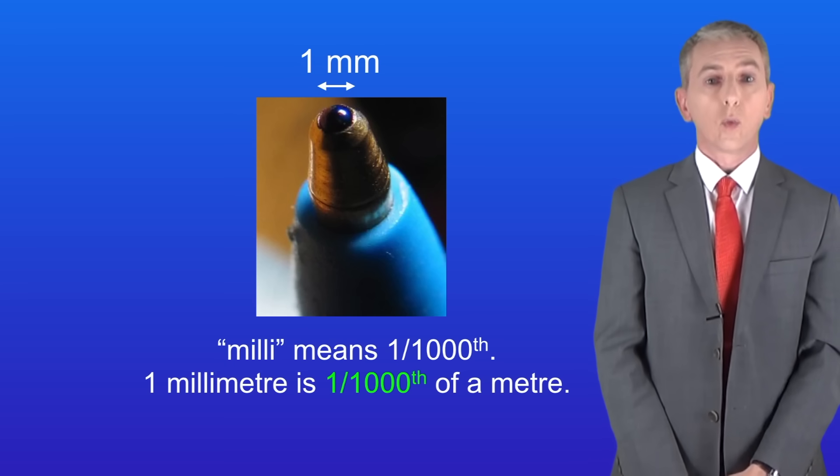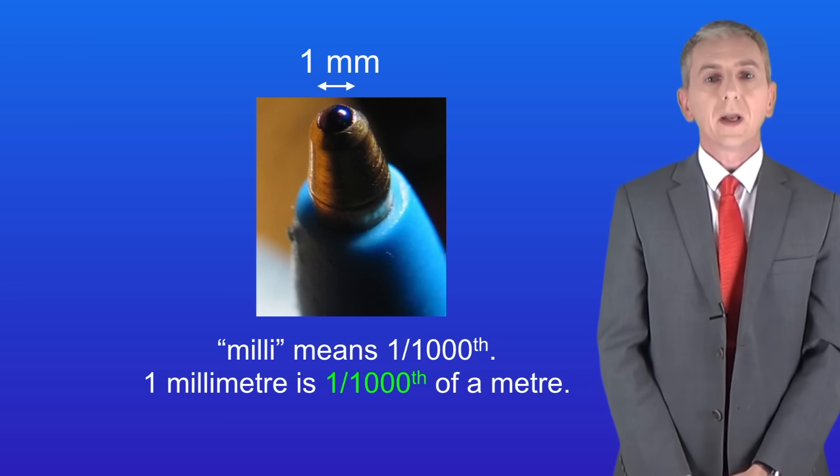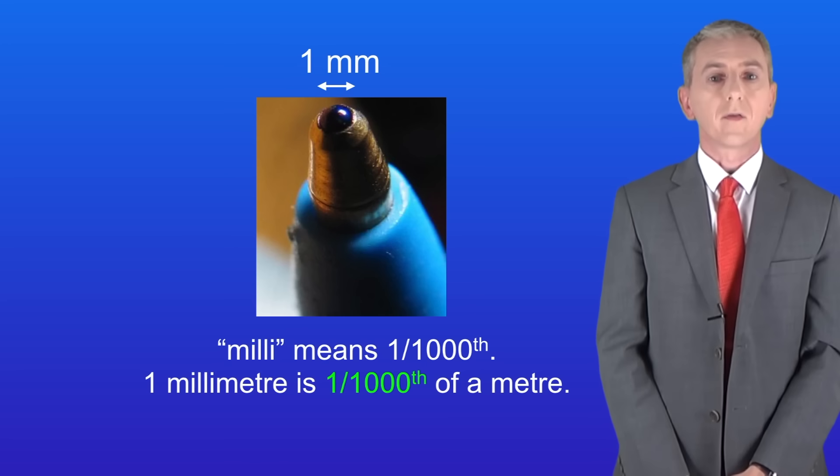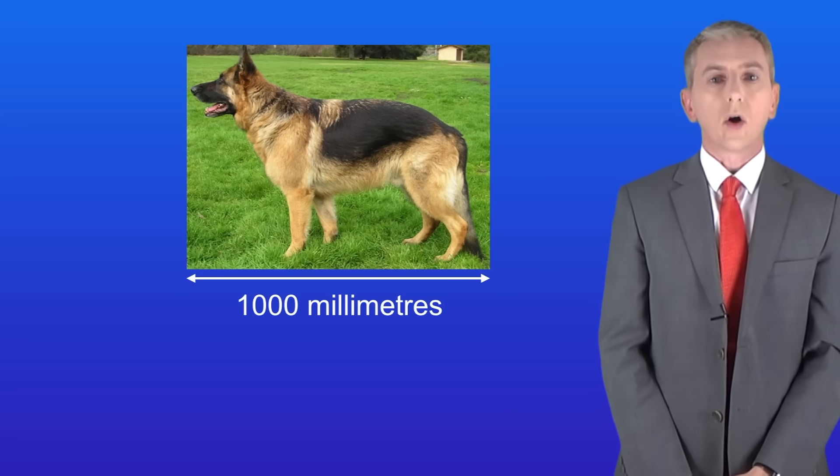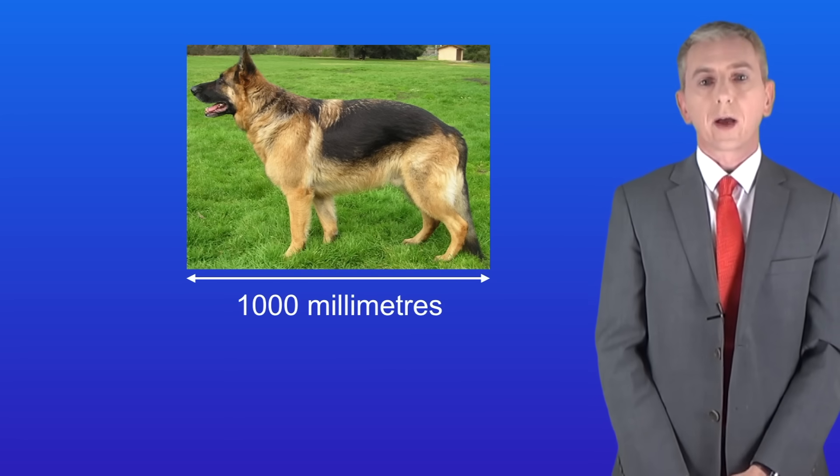The word milli means one thousandth so one millimeter means one thousandth of a meter. In standard form one millimeter is one times ten to the power of minus three meters. Going back to the dog, this is one thousand millimeters long, in other words one meter.